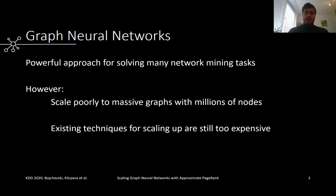Our motivation for scaling up graph neural networks in particular is because they've proven to be quite effective at solving a variety of network mining tasks and they tend to outperform classical methods. Even though they are powerful, a big drawback of GNNs is their lack of scalability, especially as the graph sizes grow into the millions.